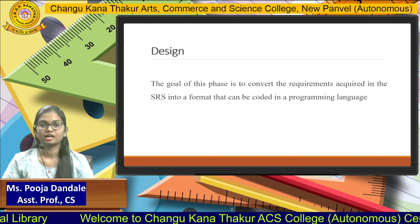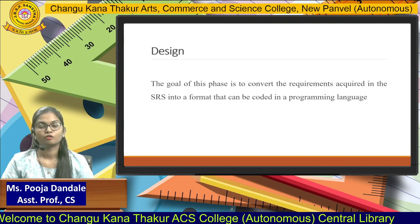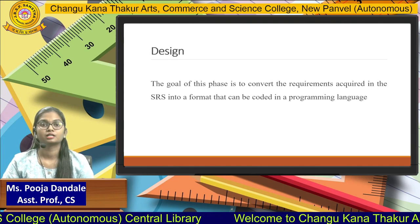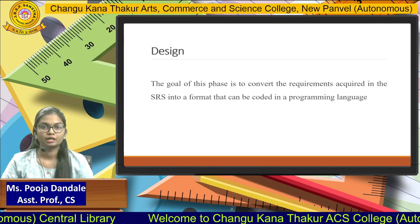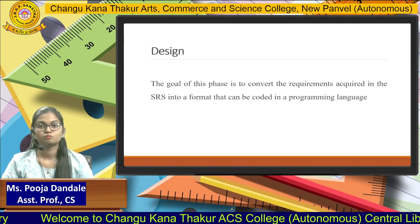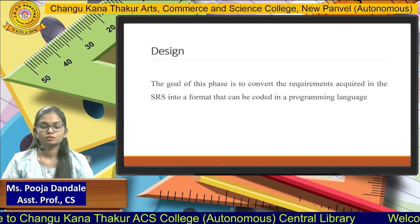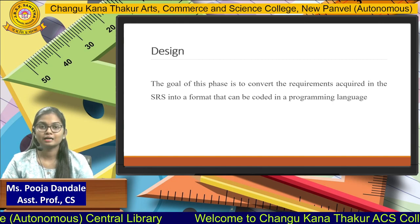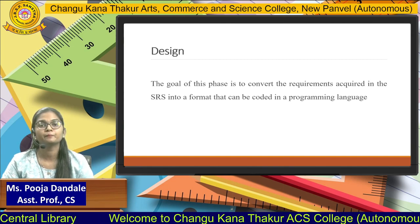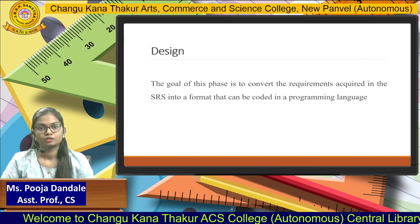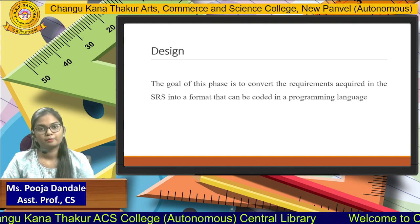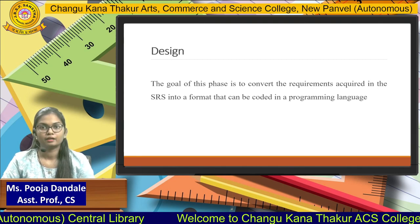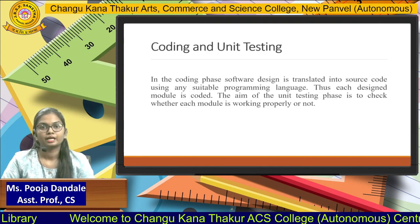Once we have done our feasibility study and gathered all the specific requirements, we design all the modules. For example, we will have a login page, a registration page, and after login we end up on the home page — we design all these modules. The goal of this phase is to convert the requirements from the SRS (Software Requirement Specification) document into a format that can be coded in a programming language.